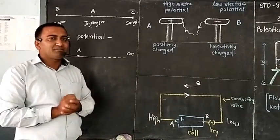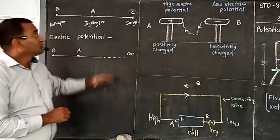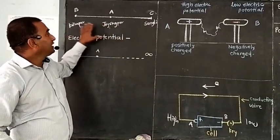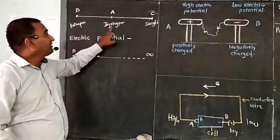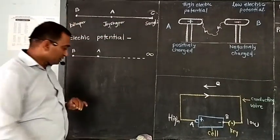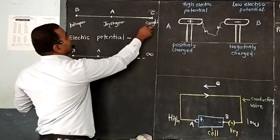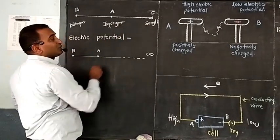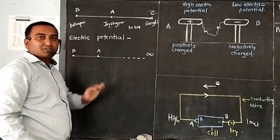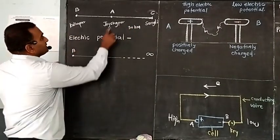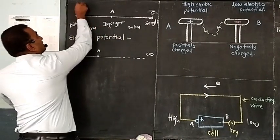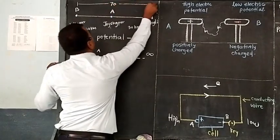Let's discuss one good example. One vehicle is in Sangli. In between Sangli and Kolhapur, we have Jaisingpur. Consider this is a straight road. The distance between Sangli and Jaisingpur is 30 km — consider only, not actually. And Jaisingpur to Kolhapur is 40 km. So, the total distance is 70 km.